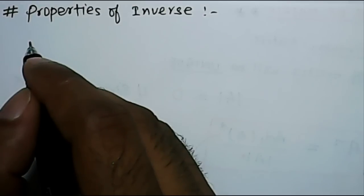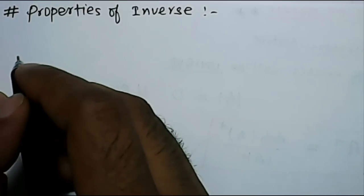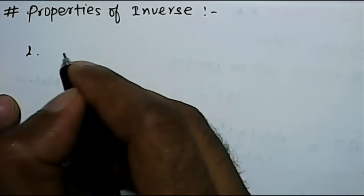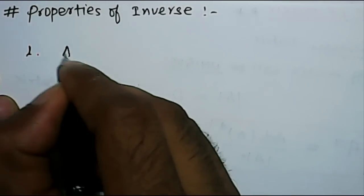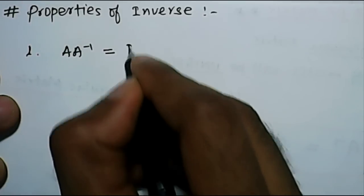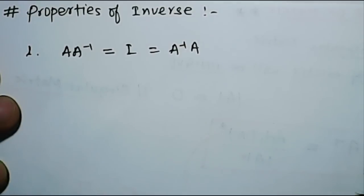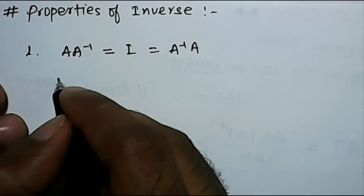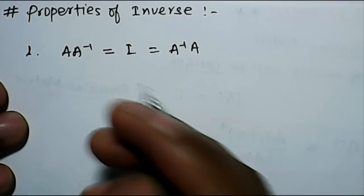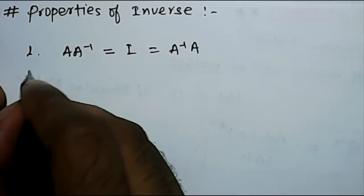Now, let's understand the properties. We have so many properties, but we will go through the properties which are important. So, the first one is, very simple, from the definition itself, that A into A inverse will become identity matrix, which is equal to A inverse into A. Then, we are just saying that if A and B are inverse of each other, then AB equal to identity matrix.